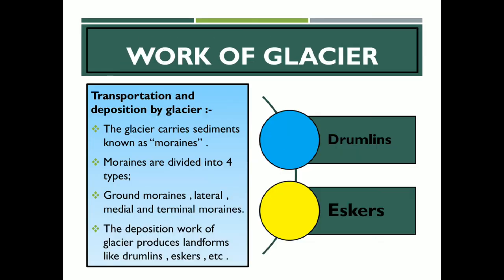Let's continue. Ab hum ne erosional work of a glacier dekha. Ab hum dekhte hain ki transportation and deposition of glacier kaisa hota hai. So the glacier carries sediment known as moraines. Geographical terms alag-alag yahan par use honge, aur in geographical terms ko use karke aapko apne answers aur statements likhne hain. Toh yahan par word use kiya hai — moraines.